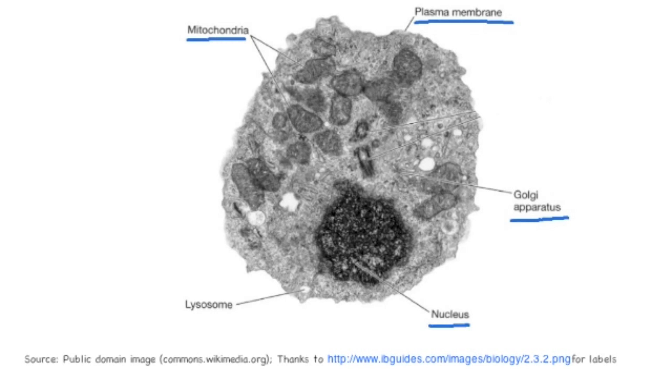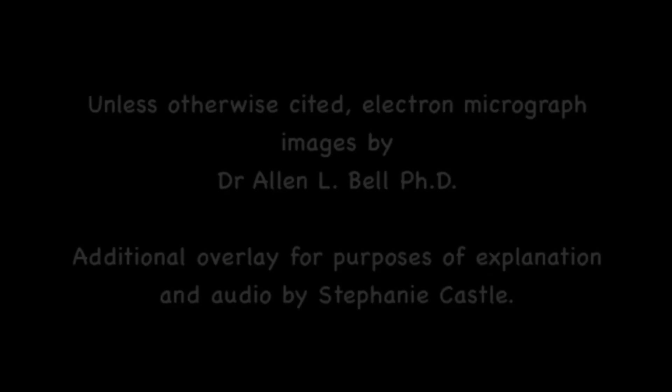The mitochondria show the lines formed by the internal membrane on the inside. And the lysosome is the smaller circular structure.